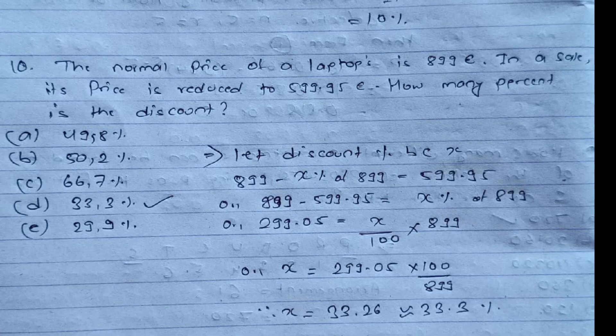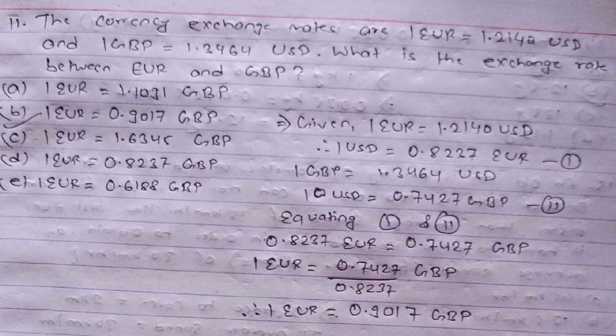Question ten: the normal price of a laptop is 899 euro; in a sale its price is reduced to 599.95 euro. What is the discount percentage? We assume the discount percent to be x. So 899 minus x% of 899 equals 599.95. Solving for x gives x equals approximately 33.26%, which rounds to 33.3%. The correct answer is option D.